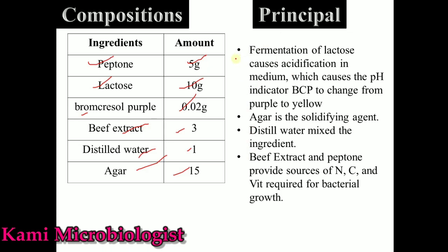Now let's talk about the principle of the media and the uses of each ingredient. Lactose is specially used as a carbohydrate source. When bacteria ferment it, they produce acid, which causes the pH to drop. Due to this, the pH indicator causes the color of the media — which is purple — to convert into yellow, showing acid formation.